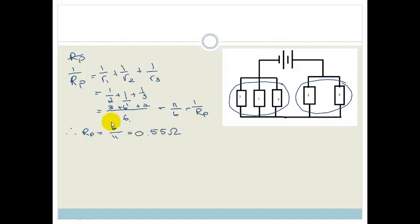So that there is the resistance of this one. So we're going to call that R P1. So in other words, I could actually replace all three of these resistors with one resistance which has a resistance of 0.55 ohms.